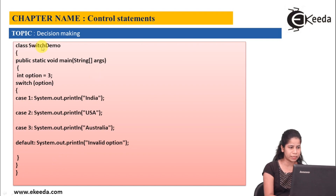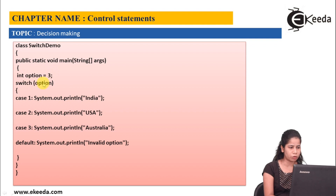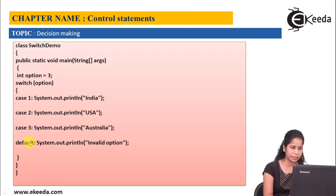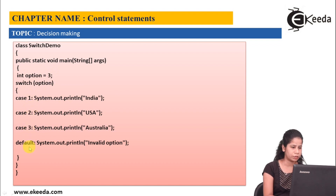Here we have class SwitchDemo with the main method. We have an integer variable option set to 3, and we are using that option as our switch expression. We have different cases and a default statement — case 1, case 2, case 3, and default. As my option is 3, let's see how it will execute.